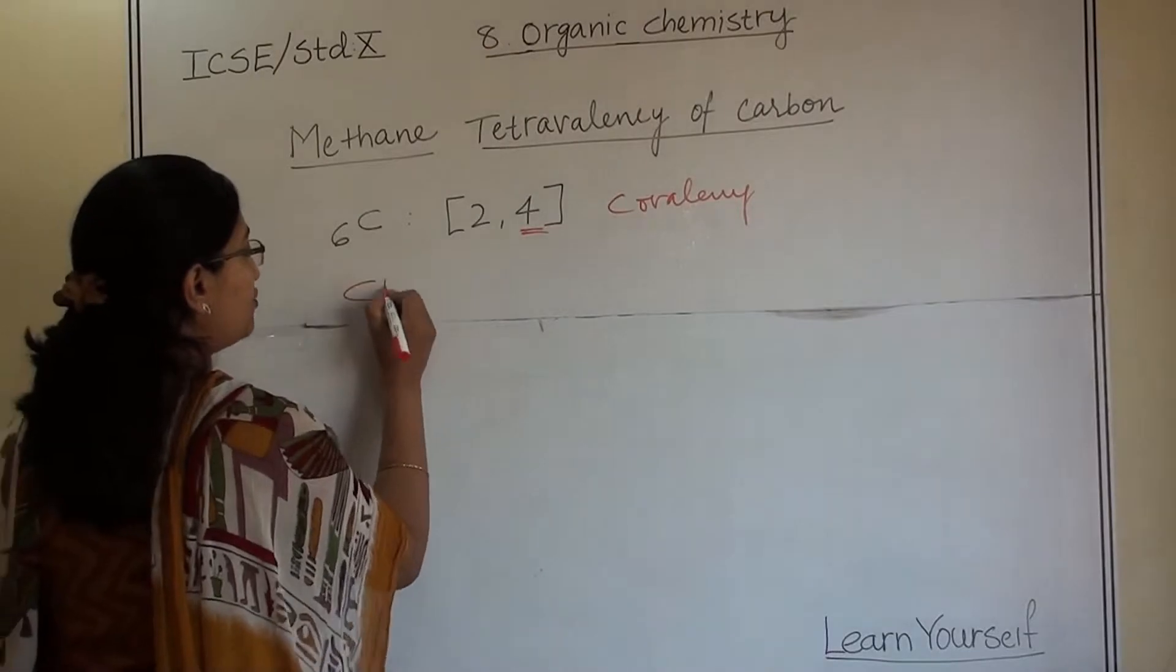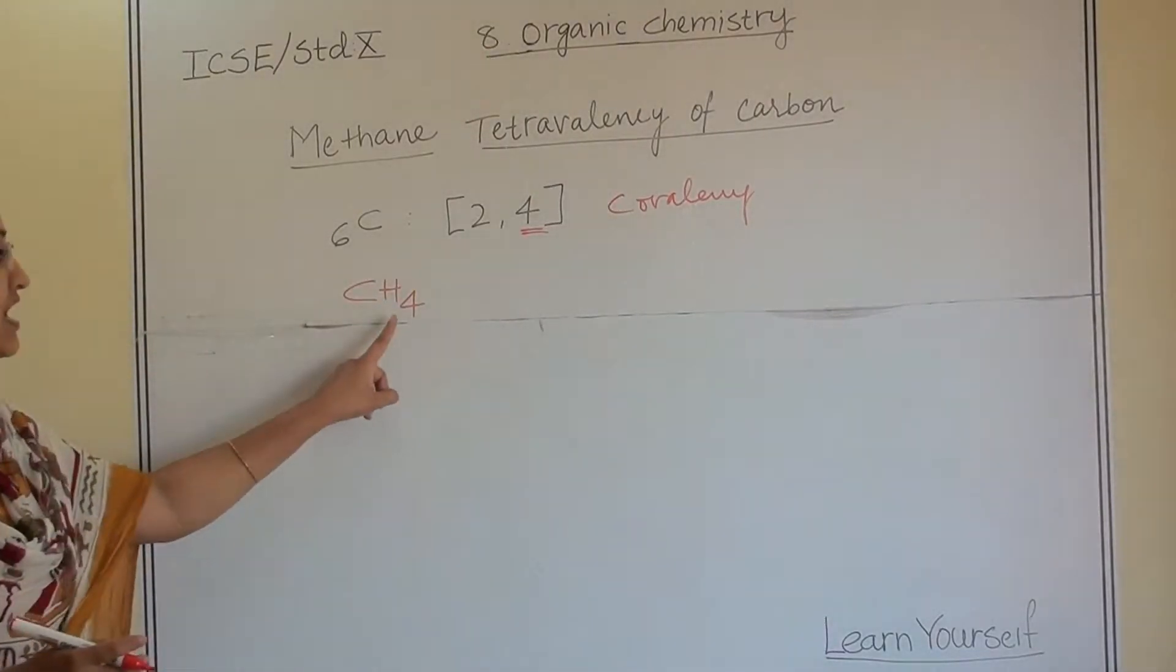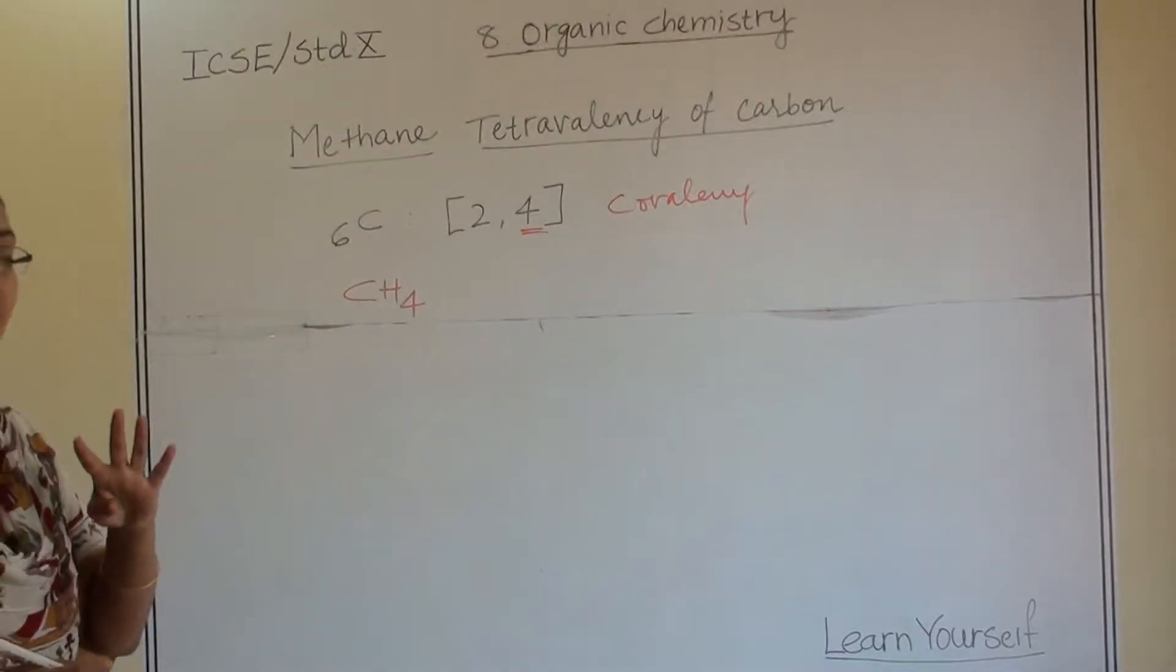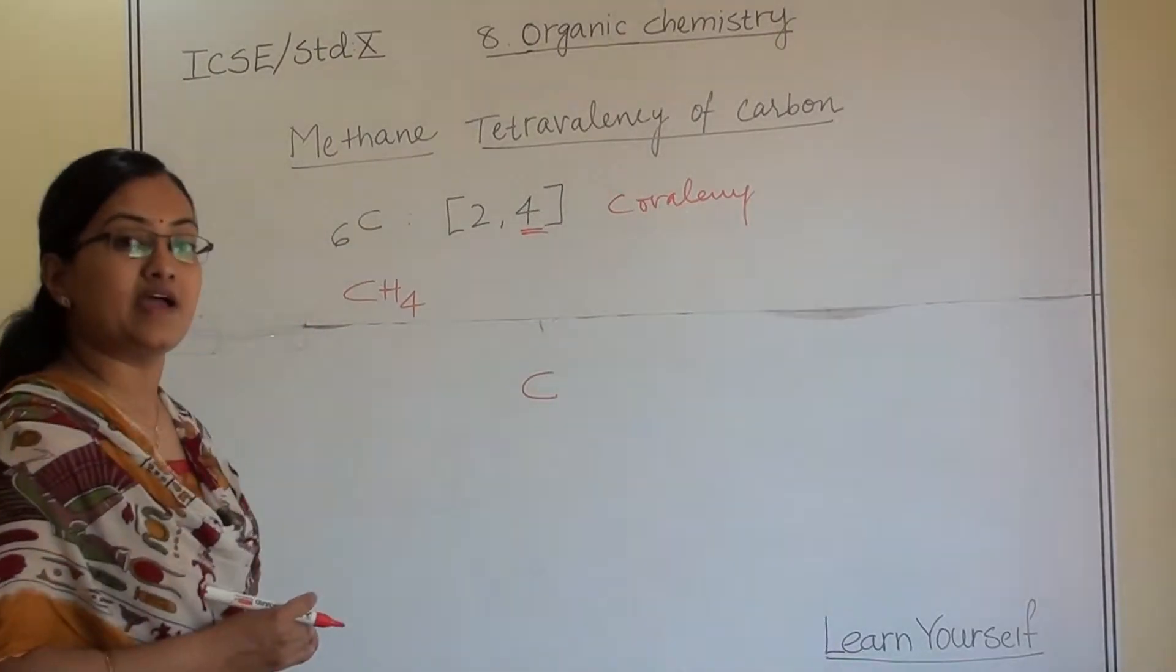Whenever we are talking about methane, the molecular formula of methane is CH4. There are 4 hydrogen atoms in that. So let us draw a dot diagram.